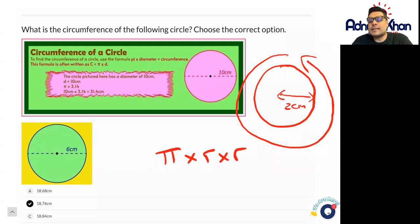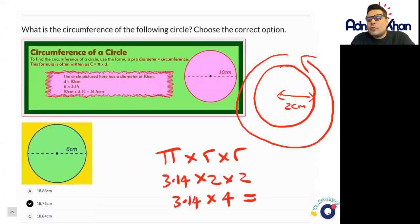So in this case, it will be that you're going to do 2 multiplied by 2 times by 3.14, or you just double the radius. So double of 2 is 4, so we know that 2 times 2 is 4, 4 multiplied by 3.14, which will be around about 12.56 centimeters.